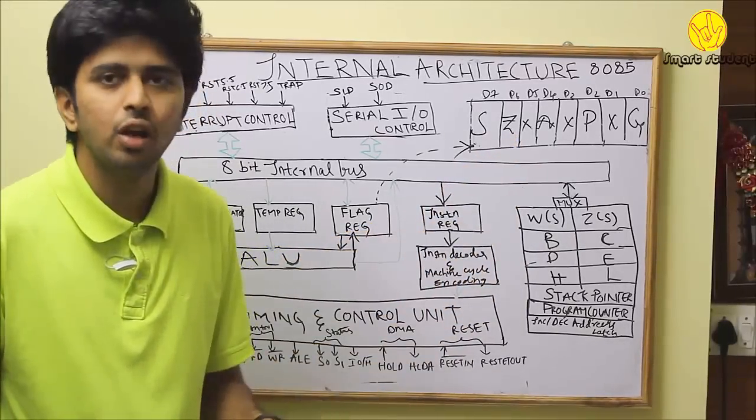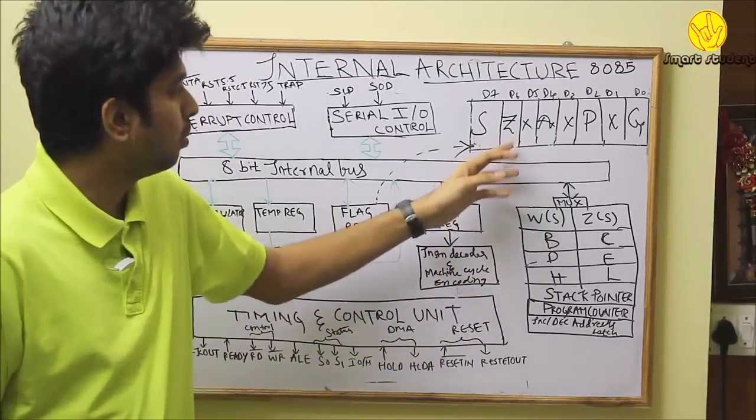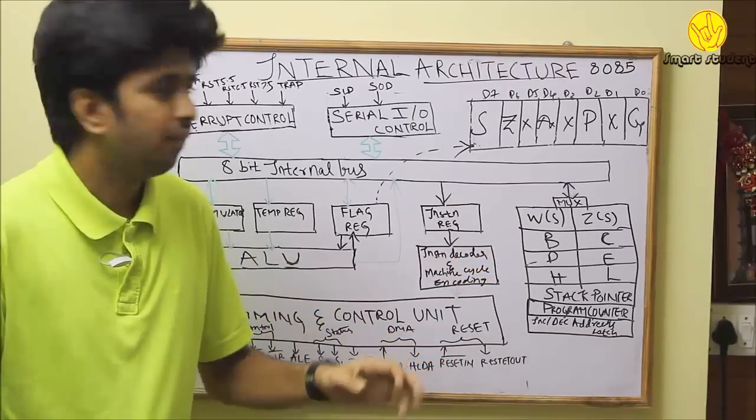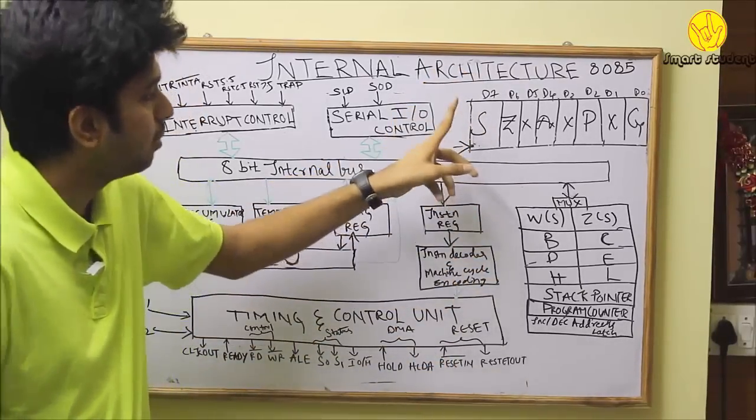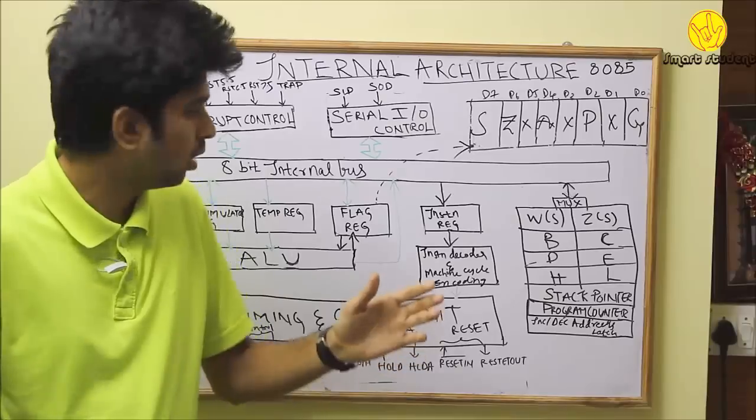Zero bit: when the result of ALU operation is 0, zero bit is set to 1. Sign bit: when the most significant bit D7 is set to 1, then sign bit is 1, or else it is set to 0.